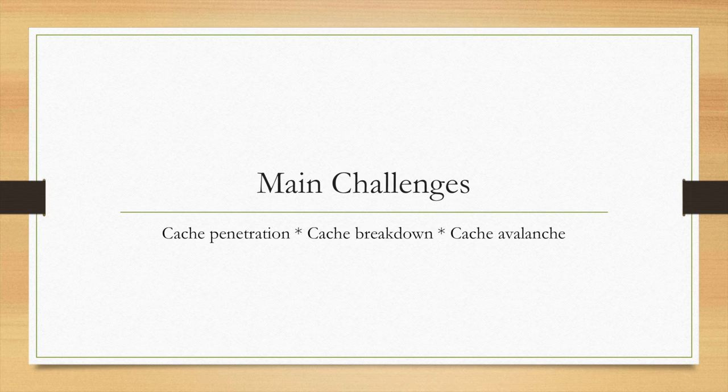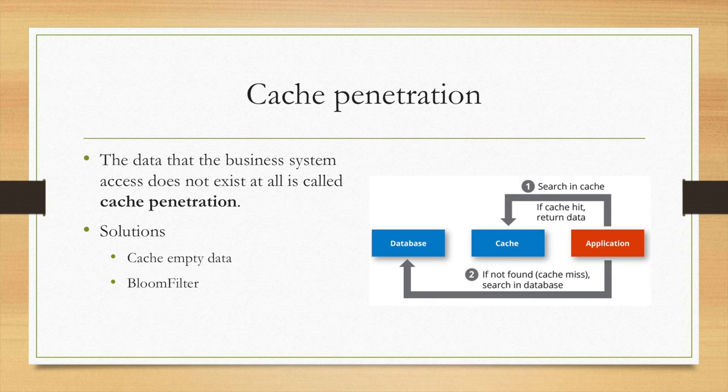Now let's move on to the main challenges. There are three challenges. One is cache penetration. We can see that the cache, if it is missed, it will go to the database. If there are a lot of queries that go to the database, it will increase the burden of DB. And this scenario is called cache penetration. This usually happens when the key doesn't exist in the cache. Of course, such a key also doesn't exist in the DB.